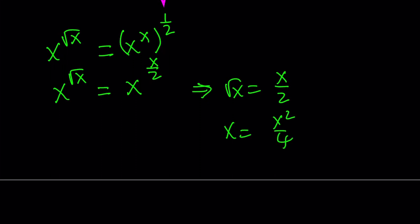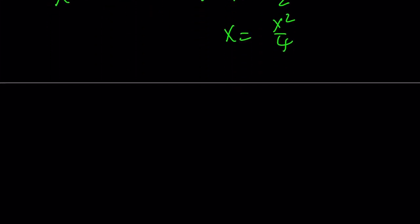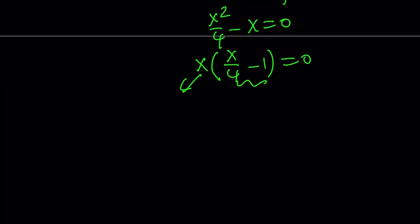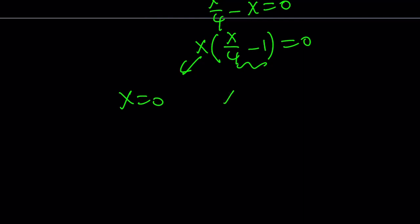Now, here you may want to divide both sides by x, but don't do it because you may lose some roots. Instead, put everything on the same side and factor. I can take out an x. That's going to give me x over 4 minus 1 equals 0. And from here, either this is 0 or that is 0, which means x is either 0 or 4.